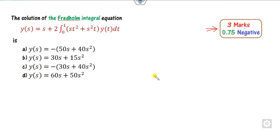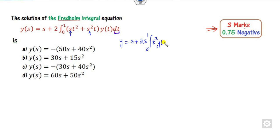How you can solve such problems — firstly, you have to think about this integration with respect to t. What is the meaning of that? It means s is my constant value, so you can take it outside of the integral. That is, s plus 2s is outside, so this is nothing but t² y(t) plus 2s² outside the integration.